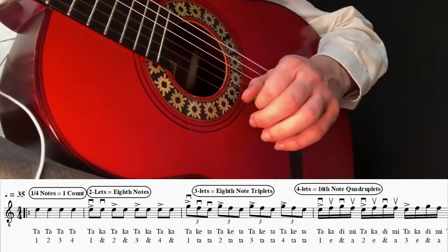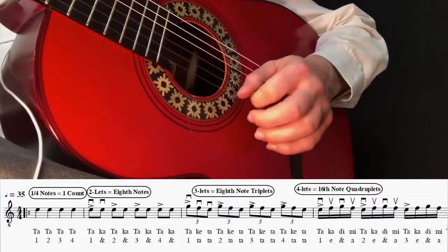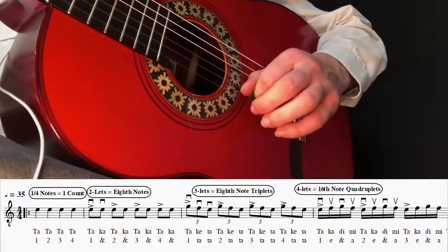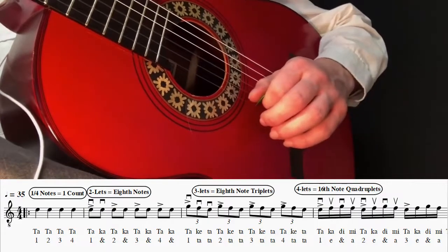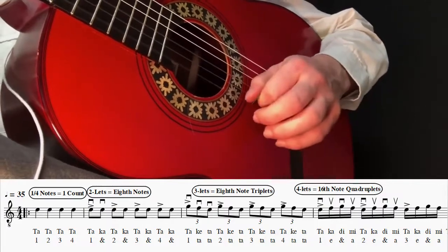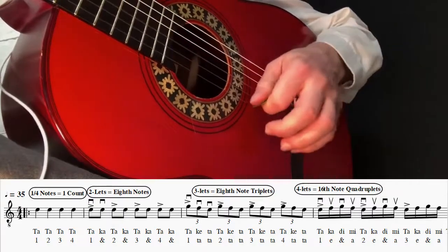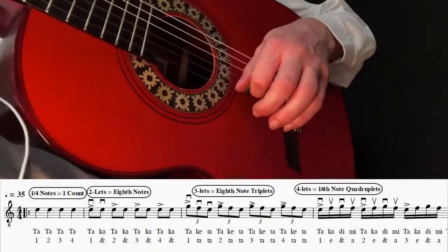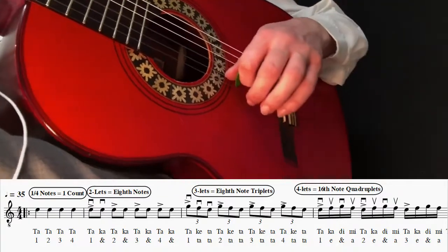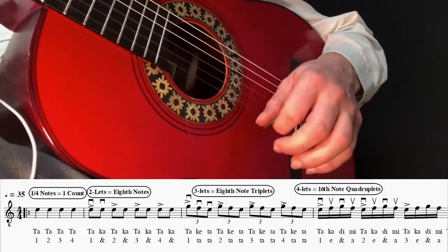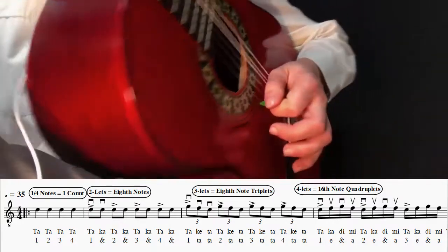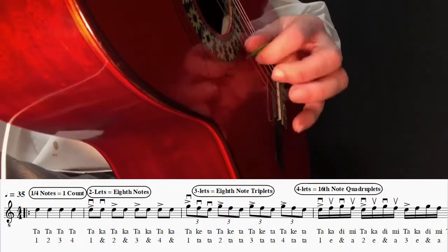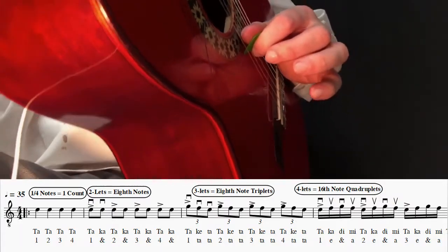So you start almost from underneath the string and pluck outwards. It makes your upstrokes a little bit stronger, and it also creates this resting stroke where you come back and you rest on the second string above the string you just played on the upstroke. So down, up, and if you look closely on the down and up, rest on the string above.